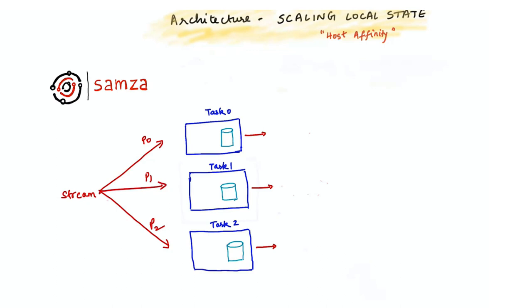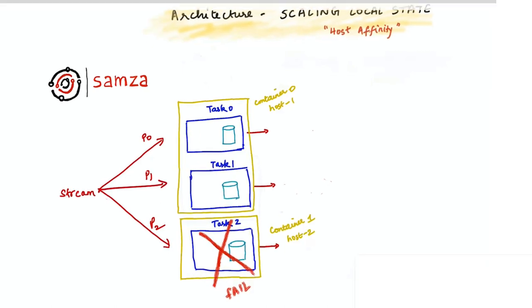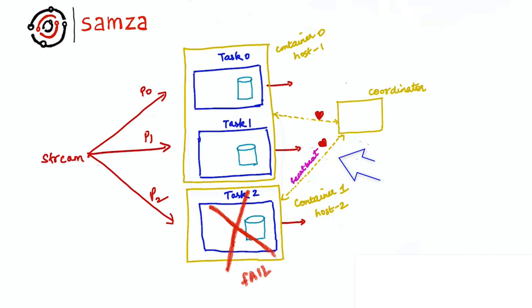Consider the following setup with three tasks and two containers. Now let's say container 1 failed. This causes the heartbeat to expire and notifies the coordinator.